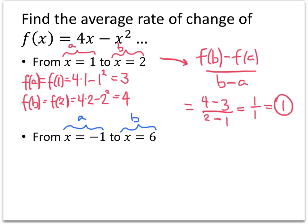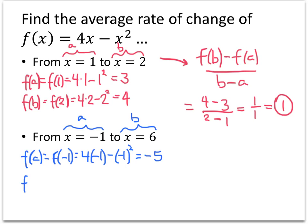I'm calling the first point a and the second point b, but if I got that switched — if I called negative 1 b and 6 a — I could still get the right answer as long as I keep my order the same on the top as I do on the bottom. So what's f(a) and f(b)? f(a) is f(negative 1), which is 4 times negative 1 minus negative 1 squared — we've got to be careful with our minus signs — and that works out to be negative 5. f(b) is f(6), which is 4 times 6 minus 6 squared, and that works out to be negative 12.